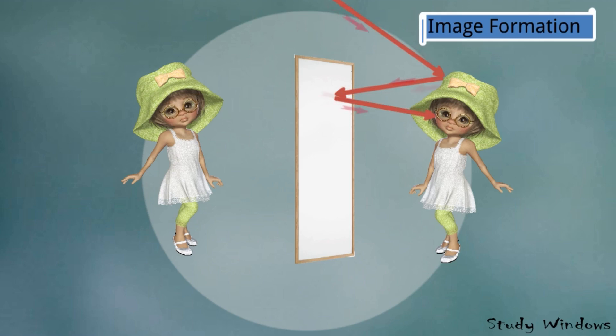It is reflected to the eye of the girl and the girl sees the light is coming from the back of the mirror and the image forms. Each point of the girl is created as the image beyond the mirror and the image is formed.